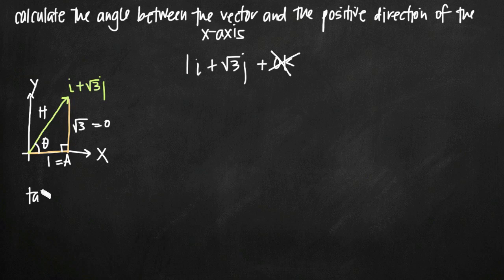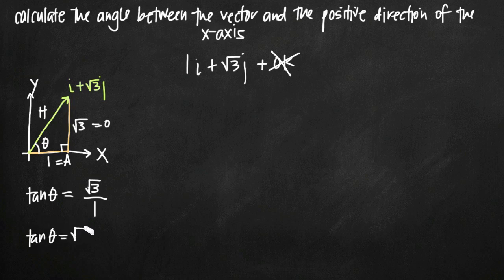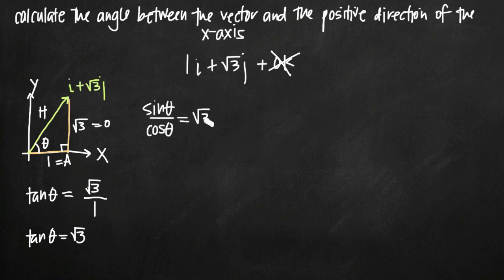Tangent of theta equals the length of the opposite side divided by the length of the adjacent side. So tangent of theta equals square root of 3 divided by 1, which simplifies to square root of 3. Now we need to solve for theta. We can rewrite this as sine of theta divided by cosine of theta equals square root of 3.